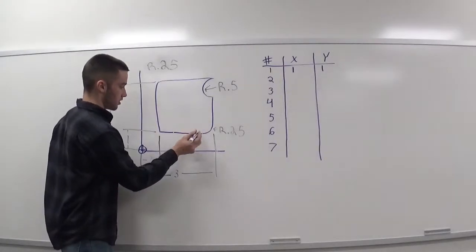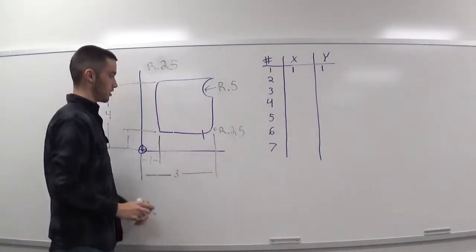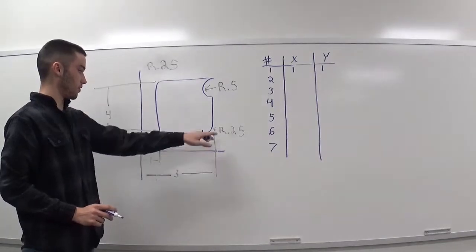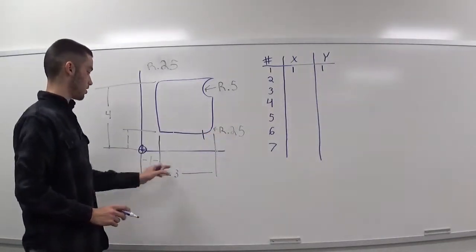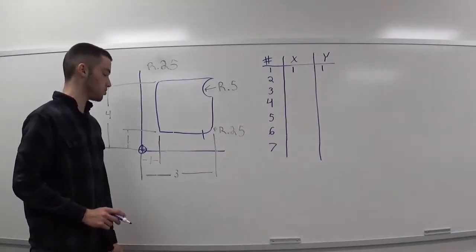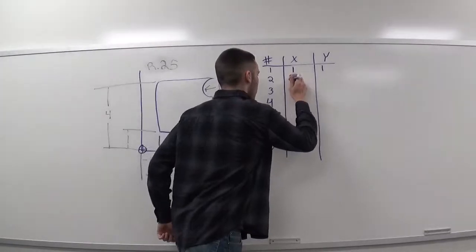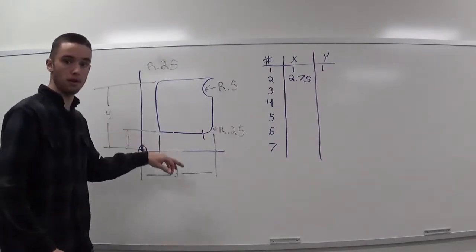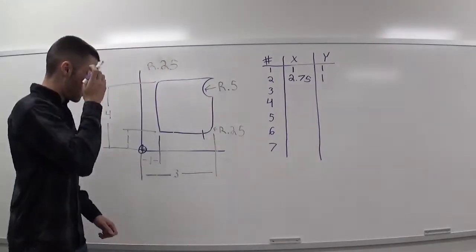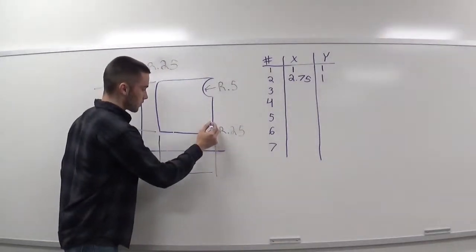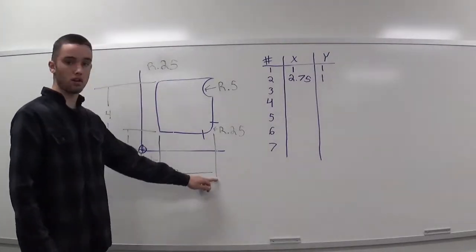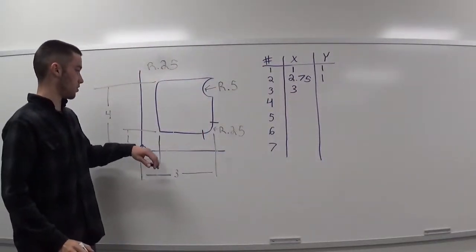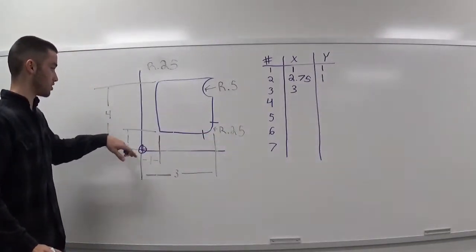Point number two will be right here. That will be the start of our first G3. We'll be using G3 right here. So, we need our start point. So, that will be a radius of 250,000. And from here to here, it's three inches. So, our x value will be 2.75. And then, our y value is still one. Point number three is our end point of this radius. And that will give us an x of three all the way over. And our y value is what the radius of 250,000 is, now one inch and 250,000.